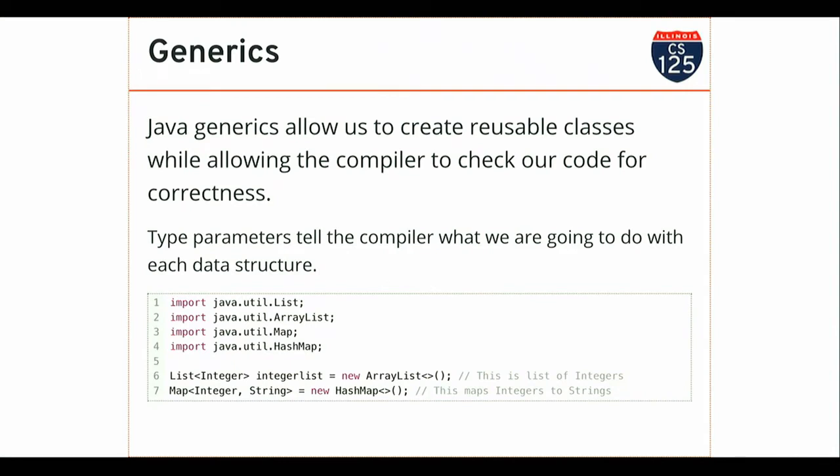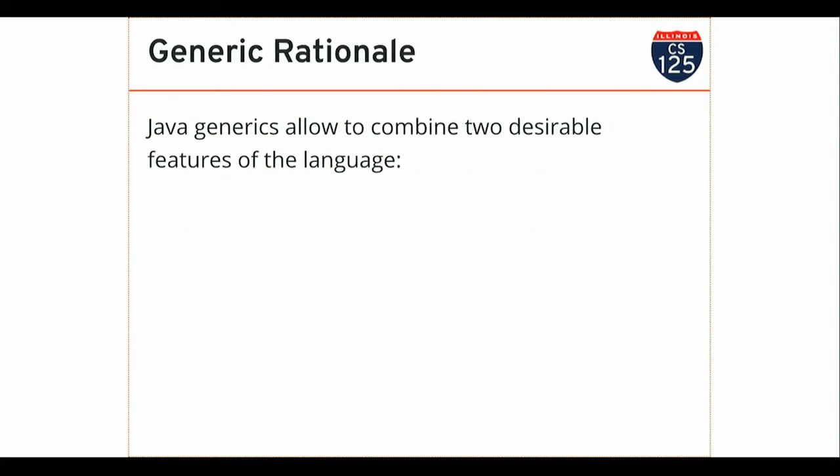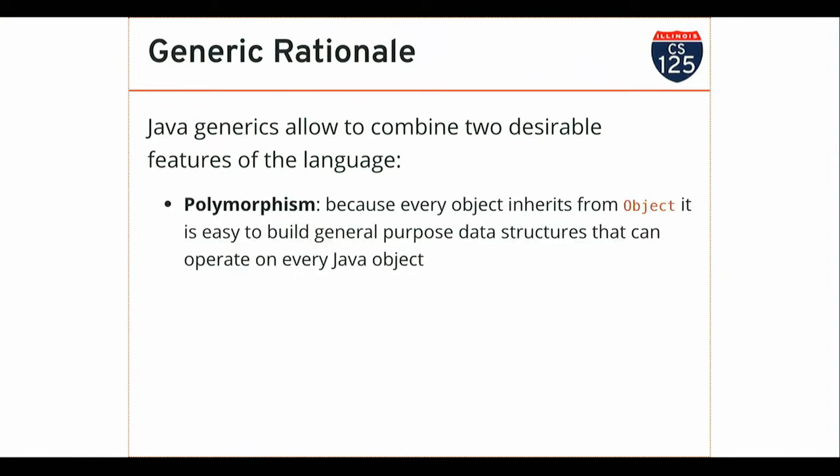So down here I'm using the diamond operator, which gives me a HashMap that maps from integers to strings. This is all sort of review. But why are generics part of the language? I want to take a step back before we start to actually use these in our code and talk about the fact that generics really allow us to combine two really desirable features of the language.